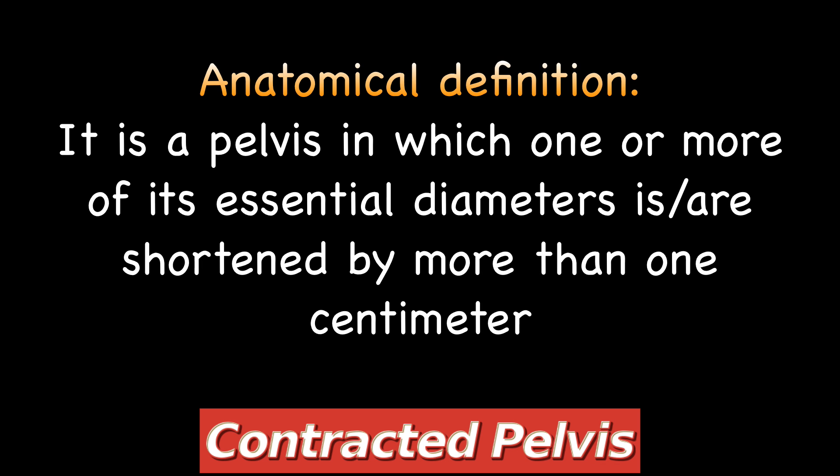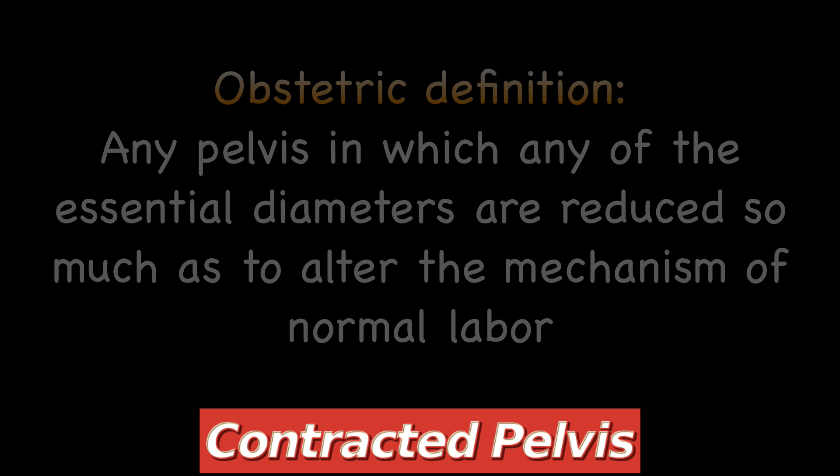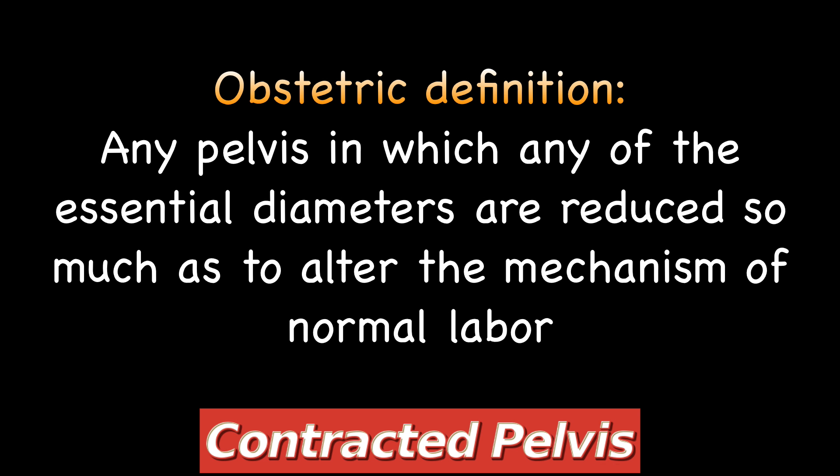The standard anatomical definition of contracted pelvis is a pelvis in which one or more of its essential diameters is or are shortened by more than one centimeter. But there can be situations where the reduction is less than one centimeter and yet the mechanism of labor is affected, and on the other hand it could be very much reduced and yet a small premature baby can deliver through it. So what matters is whether this baby will pass through the pelvis or not. Therefore we have another definition called the obstetric definition: any pelvis in which any of the essential diameters are reduced so as to alter the mechanism of normal labor.